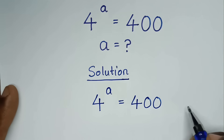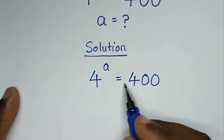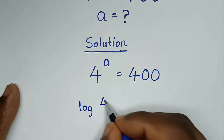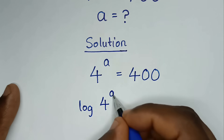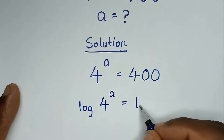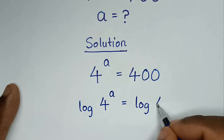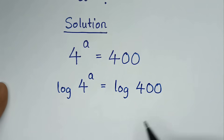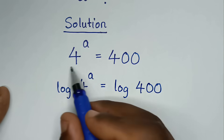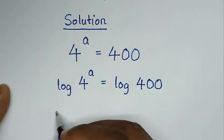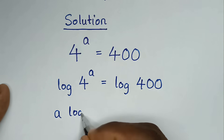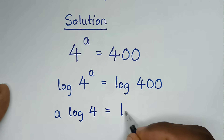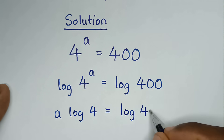In the first step, we will apply log in both sides. So it will be log of 4 power of a is equal to log of 400. Then this power of a will move to the base, so it will be a log of 4 is equal to log of 400.